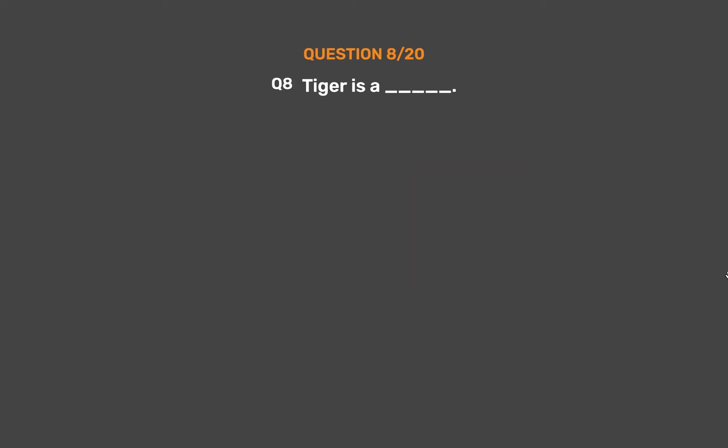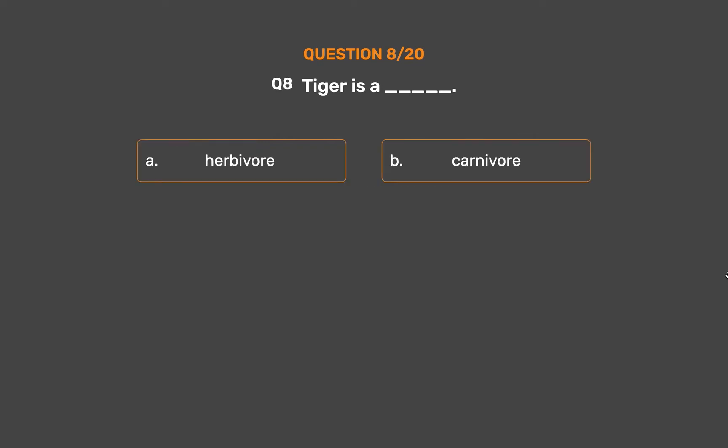Question number 8. Tiger is a: Option A, Herbivore. Option B, Carnivore. Option C, Omnivore. Option D, Saprophyte.